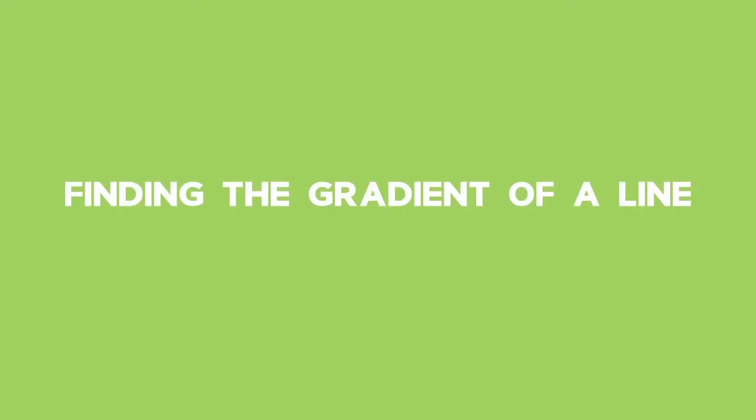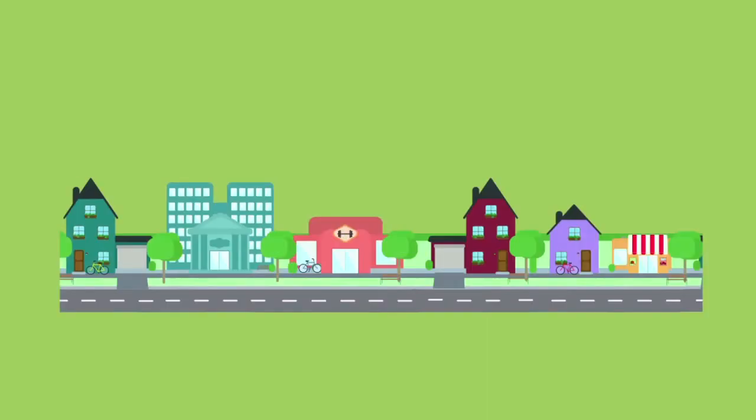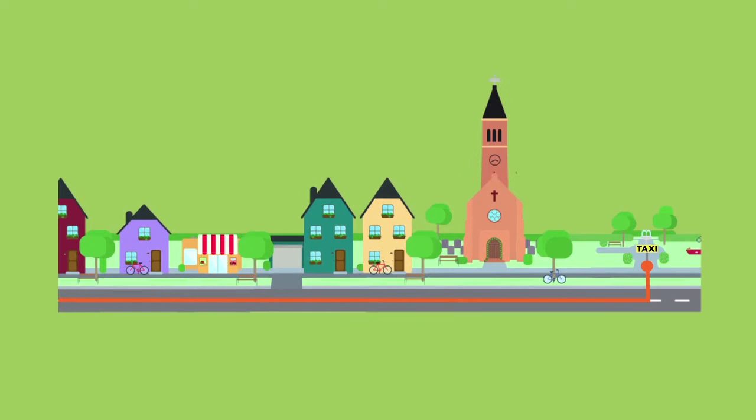Finding the gradient of a line. Worked example: Every morning, Ivan walks along a straight road from his home to a taxi stop 160 meters away and takes a taxi to school.